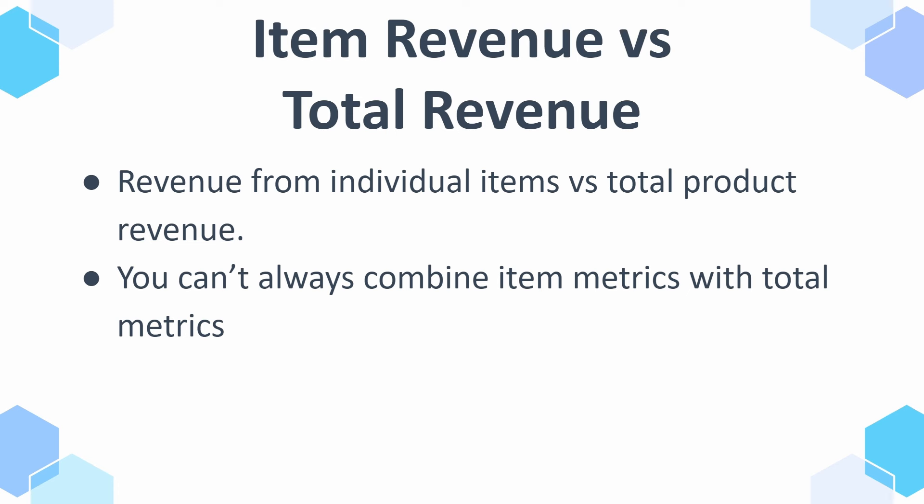Unfortunately, you can't always combine item metrics with total metrics. So if you're looking at item name with how many times it's been added to a cart, you're probably not going to be able to add total revenue to each of those items because GA4 is not able to count that. That's why you need to pair item metrics with item dimensions, which we'll cover a bit later in this video.